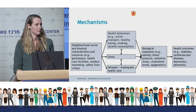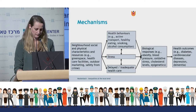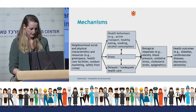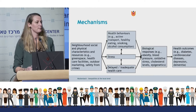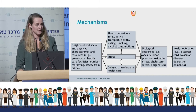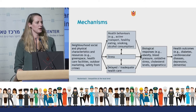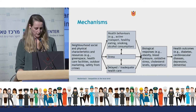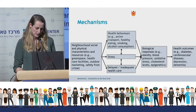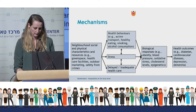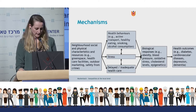But how do all those neighborhood characteristics get under the skin? I present a framework of the pathways through which neighborhoods affect health outcomes and the inequalities therein. Neighborhood social and physical characteristics and the resources in neighborhoods may affect health behaviors such as exercising and alcohol consumption. Neighborhood characteristics may also lead to stress — for example due to unsafety or lack of adequate resources. Lack of access to healthcare services in the neighborhood may also lead to delayed or inadequate healthcare usage. These three factors influence each other and may lead to biological responses such as inflammation and unhealthy cholesterol levels, which in turn affect disease and mortality risk.